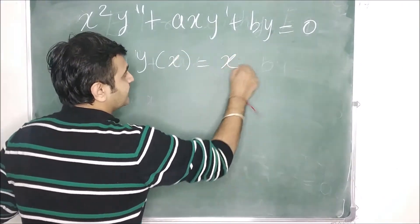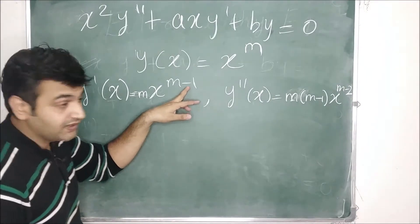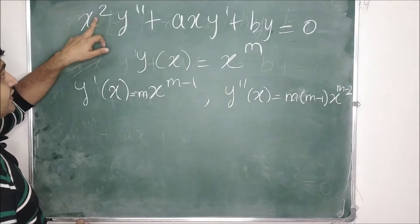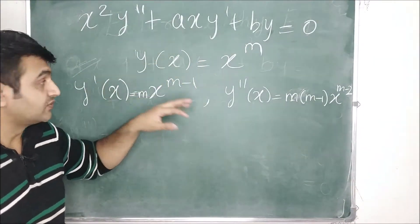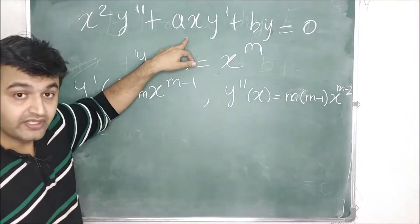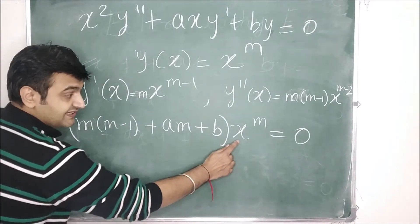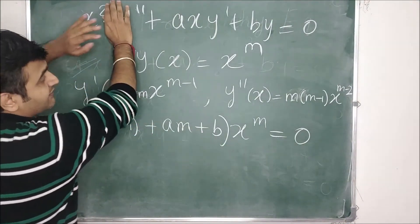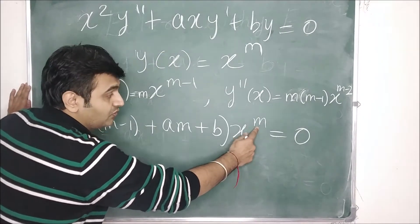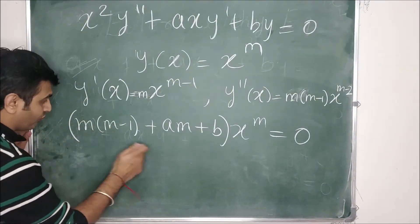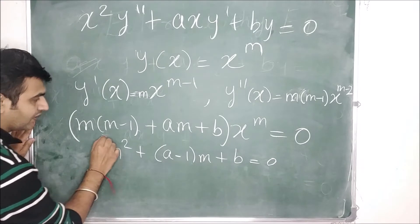We let y(x) = x^m be the solution. When you take the first and second derivatives you get x^(m-1) and x^(m-2), and when you plug these in, the x² and x factors cancel the powers, making this a good trial solution. Substituting and factoring out x^m, since x is non-zero, x^m is non-zero, so the remaining factor must equal zero.